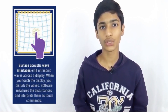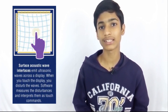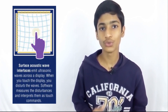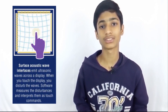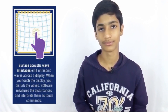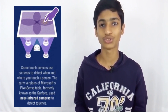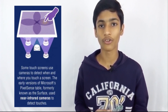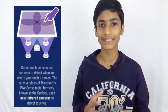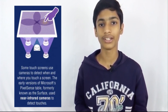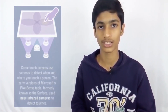There are other types of touch screens also. Surface acoustic wave interfaces emit ultrasonic waves across a display. When you touch the display, you disturb the waves. Software measures the disturbances and interprets them as a touch command. Some touch screens use cameras to detect when and where you touch a screen. The early version of Microsoft's PixelSense tablet, formerly known as the Surface, used near-infrared cameras to detect touches.